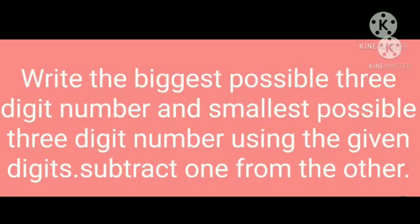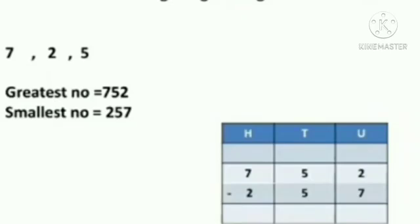Write the biggest possible three-digit number and the smallest possible three-digit number using the given digits, then subtract one from the other. The numbers given are 7, 2, and 5. Out of these numbers, we have to make the greatest number as well as the smallest number. Arranging in descending order for the greatest number: 7 is bigger than 5 and then 2. So 752 is the greater number.